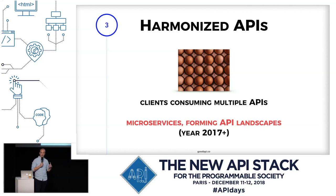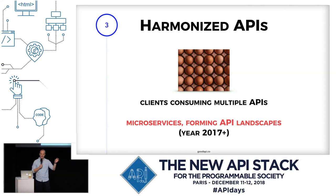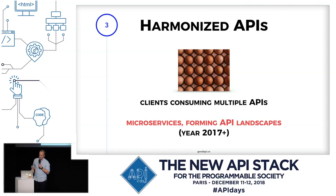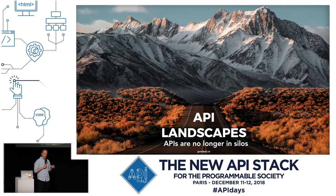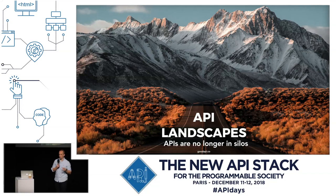This is even more true with microservices, because microservices simply mean multiple APIs — and you probably want them harmonized so it's easier for consumers. It's not just microservices either. We are now seeing forming API landscapes — quite a new thing that wasn't here some 10 years ago.